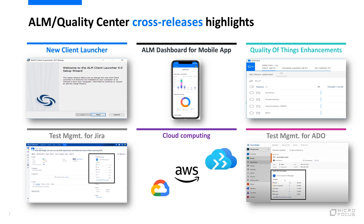The quality of things enhancements allow you to download the test lab tree, including subfolders, and to display all step fields during test execution. The test management plugins for Jira and Azure DevOps help you establish visibility into the quality processes being managed in ALM and Quality Center. And the support for public cloud providers enables you to deploy ALM and Quality Center on any public cloud, such as Azure, AWS, and Google Cloud.